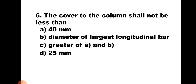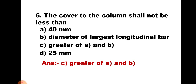Question number 6. The cover to the column shall not be less than: A) 40 mm, B) diameter of the largest longitudinal bar, C) greater of A and B, or D) 25 mm. The minimum cover for the column should be 40 mm or the diameter of the bar, whichever is more. Hence the correct answer is option C, greater of A and B.